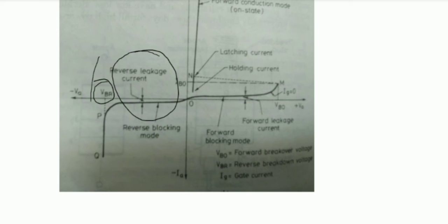As the reverse voltage is increased, at a critical breakdown level called reverse breakdown voltage VBR, avalanche breakdown occurs across J1 and J3 and the reverse current increases. When the reverse voltage is less than VBR, the device offers high impedance in the reverse direction, so the SCR in reverse blocking mode may be treated as an open switch.